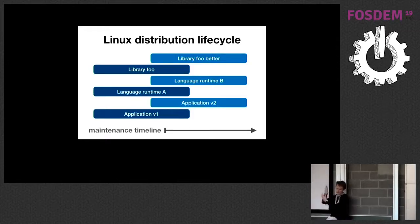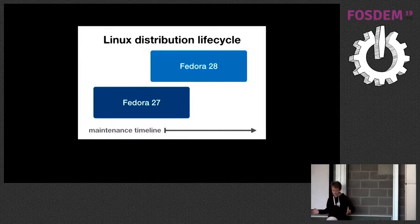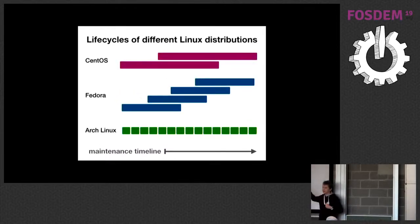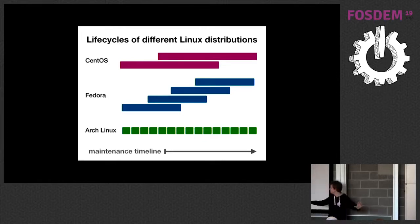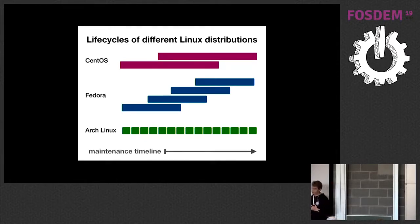Linux distributions fix this by picking a set of projects and magically aligning their life cycles for a certain period. They release everything together as a distribution release — like Fedora 27 or 28. There's a big variety: CentOS for long-term support, Fedora every 13 months, or Arch Linux with rolling releases.